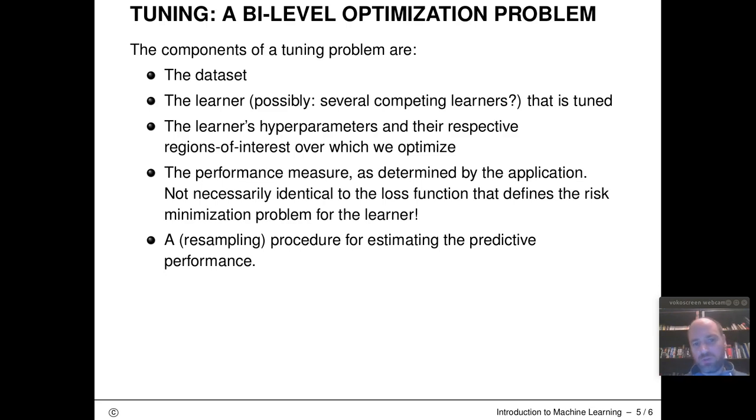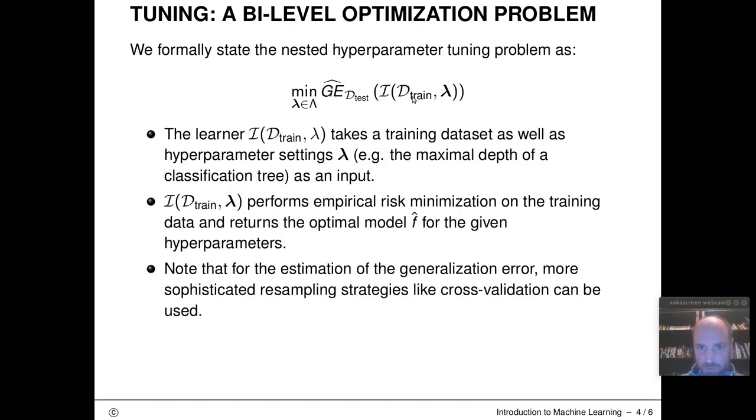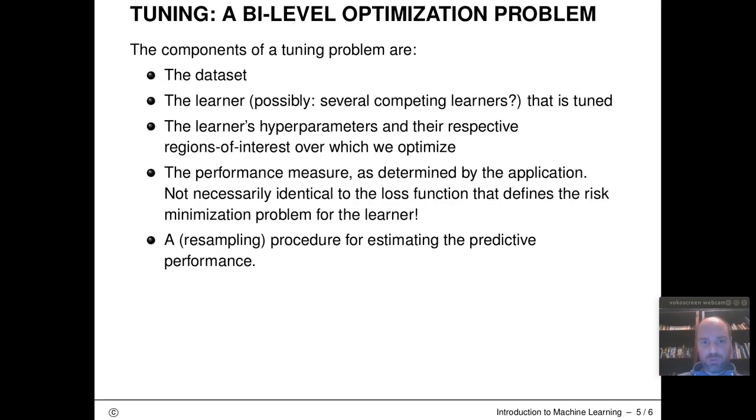And then the last component is this resampling procedure that we use for splitting up of our data that defines our estimation procedure for the predictive performance. So this is what I've written down here with this simple train and test split procedure, which in general might be some form of cross validation.